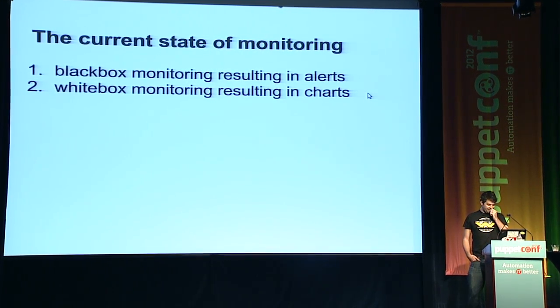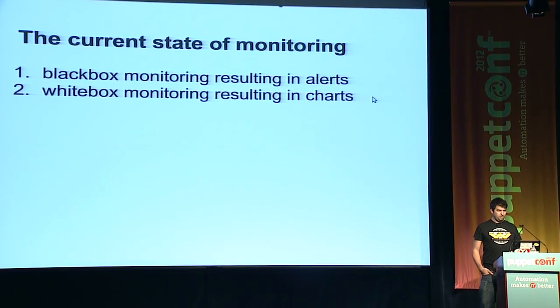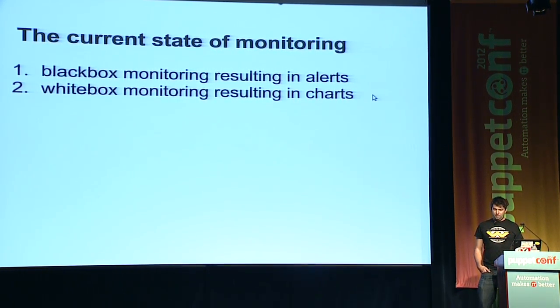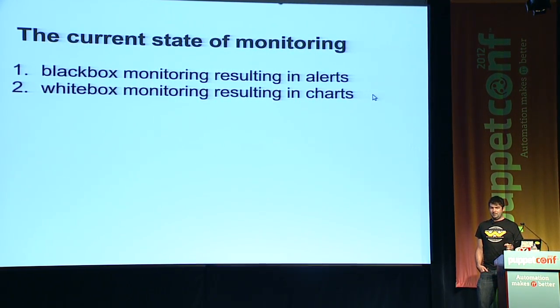But as I see it right now in the open source world, there's two main features of monitoring. Black box monitoring, which is to treat the system as a black box and probe it as a user would, and that results in alerts. And there's white box monitoring, which is to look at the internal state of the system, and that gets written to time series databases and turns into charts.